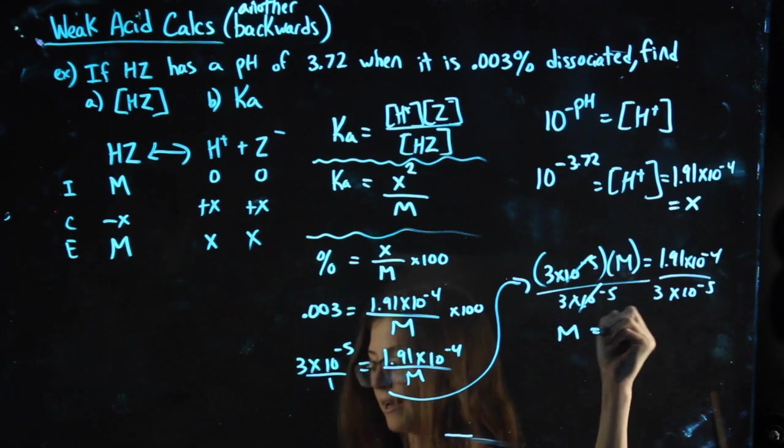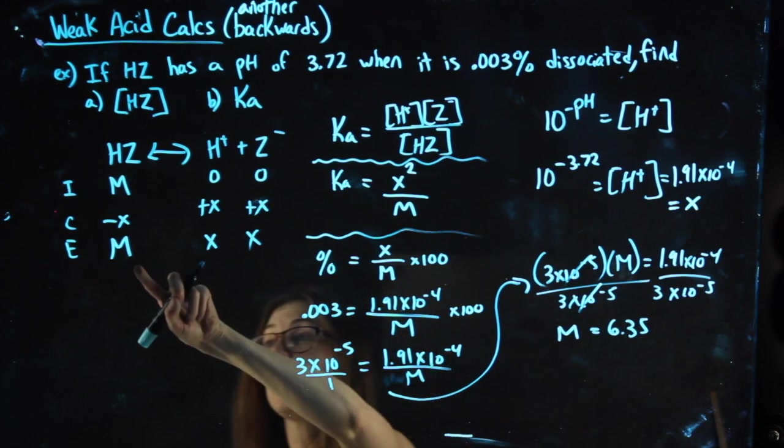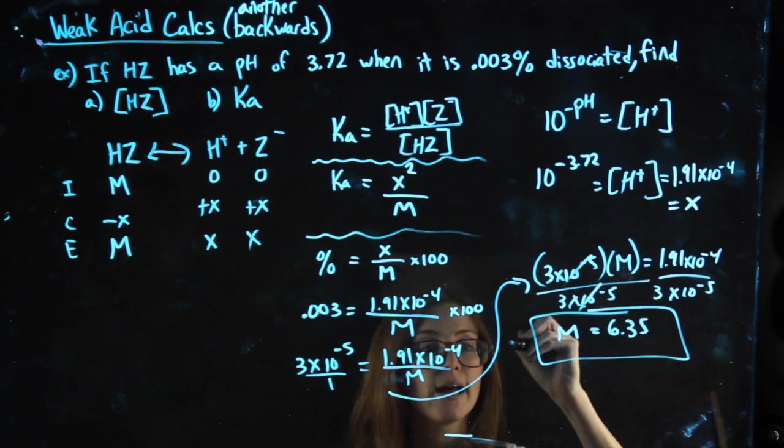For my molarity, I get 6.35. That's what I got for M. M represented the concentration of HZ. This is my answer for part A.